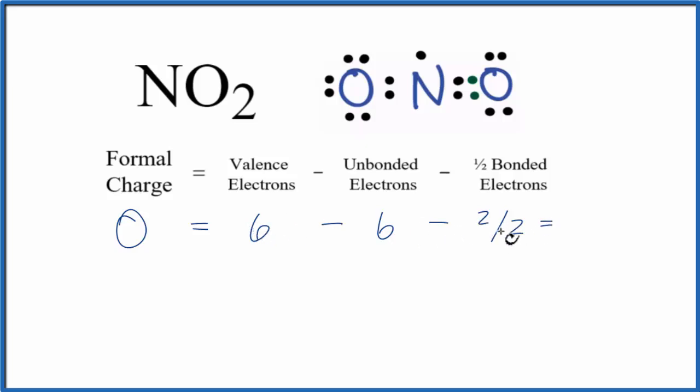And we have six minus six, that's zero, minus two over two, one. So minus one. That's the formal charge on this oxygen right here.